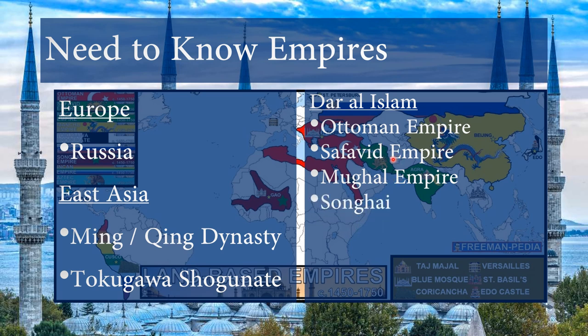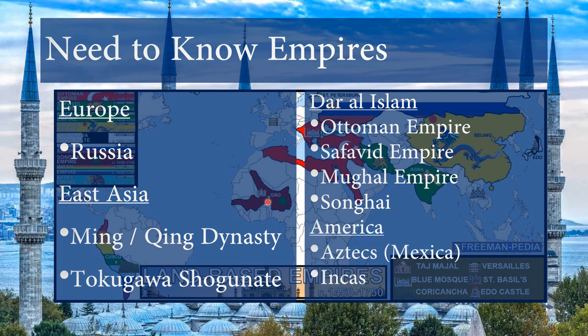You have the Songhai in West Africa — they're not really a gunpowder empire, and it's really the elites who convert to Islam. The Songhai are very much a continuation of the Mali empire. And don't forget, in the Americas, you also have the Aztecs and the Incas still going strong for a brief time before the Conquistadors show up.